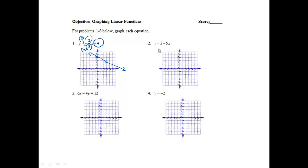Number 2, y equals 3 minus 5x. Again, I'm going to circle the number that doesn't have the x on it, so we're going to start at the y-intercept of 3. And then since the x doesn't have a fraction, I'll put a 1 underneath it, and again, it's negative.